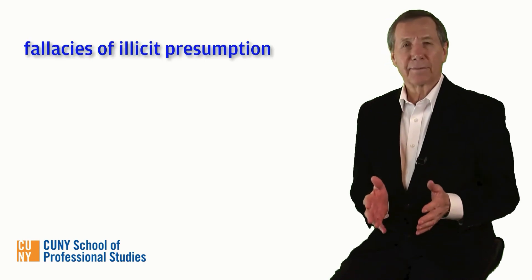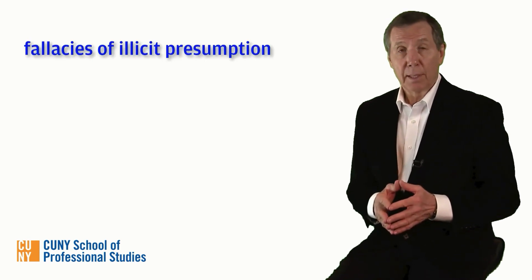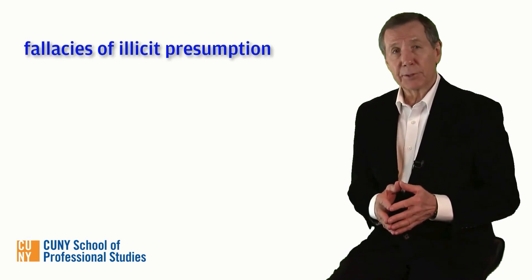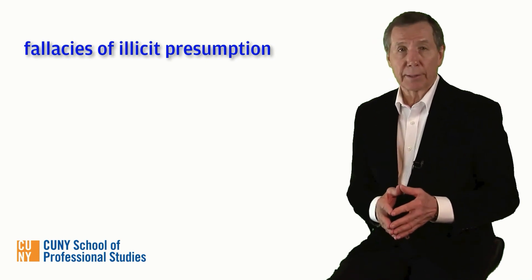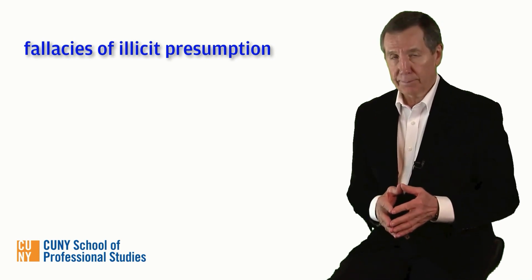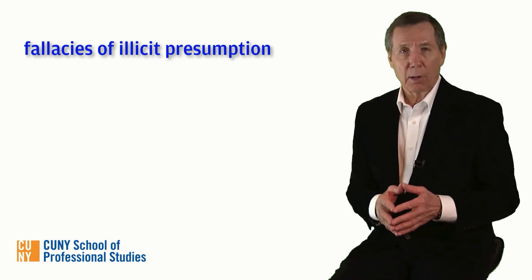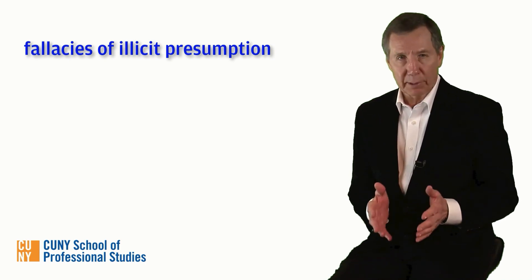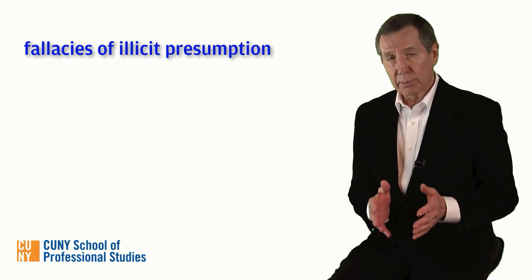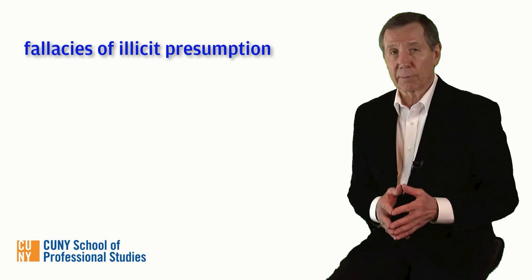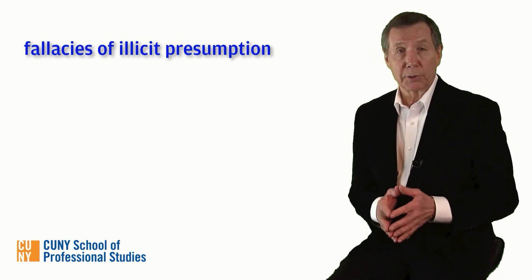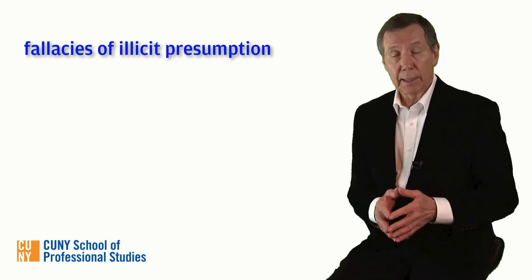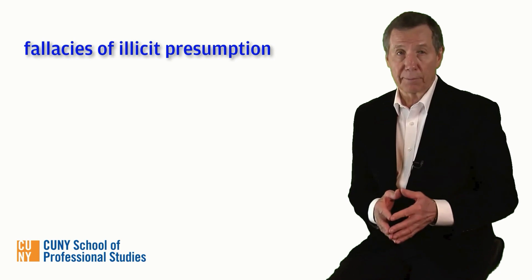Welcome back. We turn now to the fallacies of illicit presumption, whose defining feature is that they presume the truth of some claim to which they are not entitled. These fallacies are arguments with a premise, often hidden, that is assumed to be true but is actually a controversial claim, which at best requires support that is not provided, and which, at worst, is simply false.